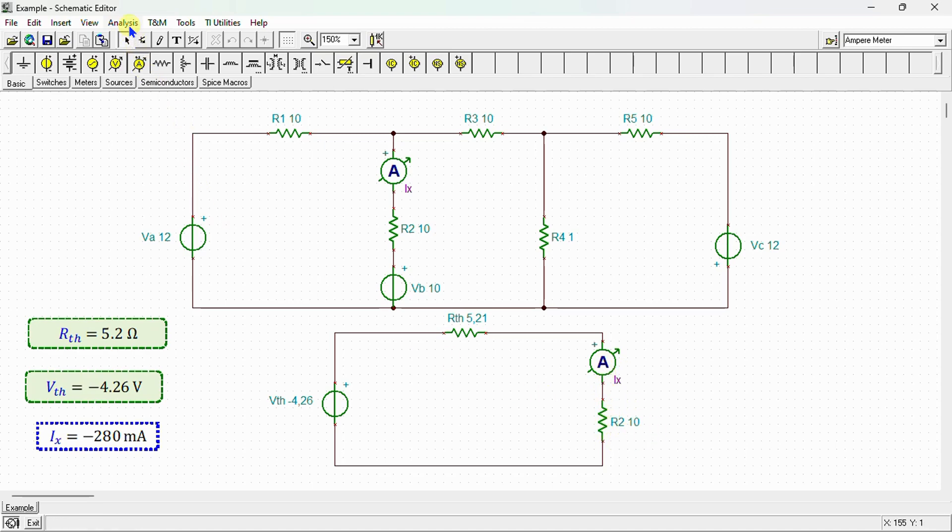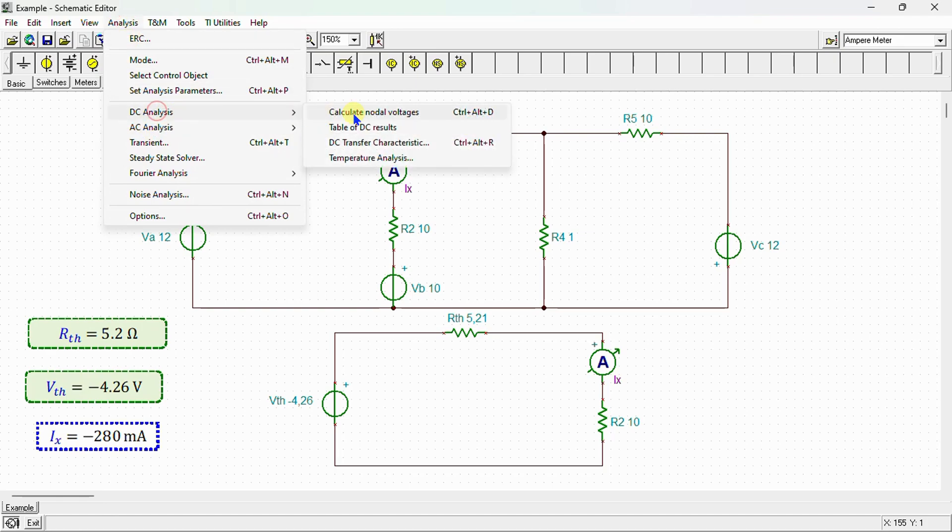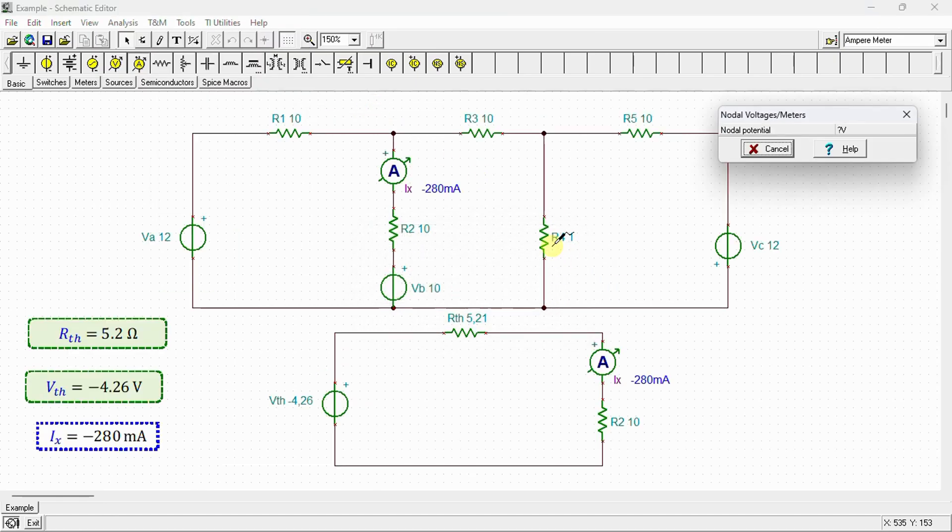Let's move on to analysis. This analysis calculates nodal voltages. We can see here that Ix is equal to negative 280 milliamps in the original circuit, and Ix is equal to negative 280 milliamps in the Thevenin's equivalent circuit.